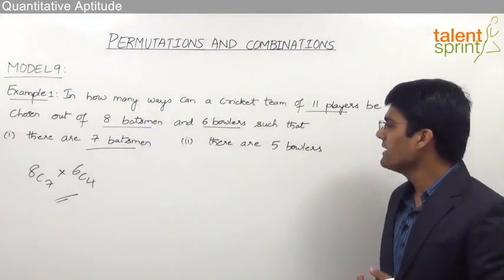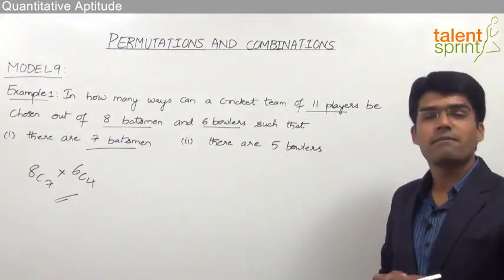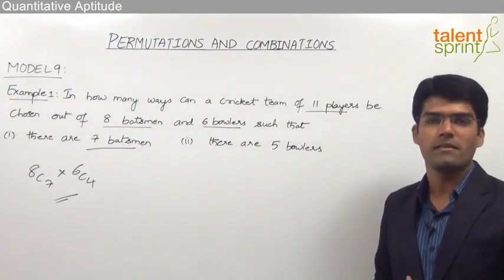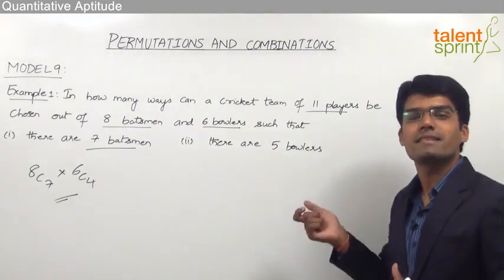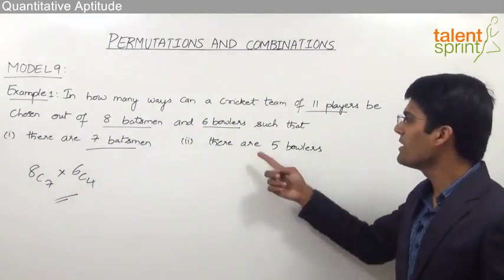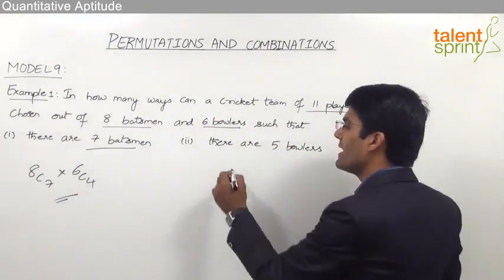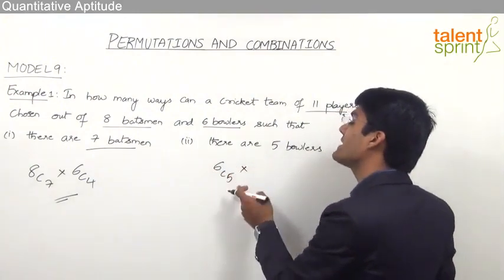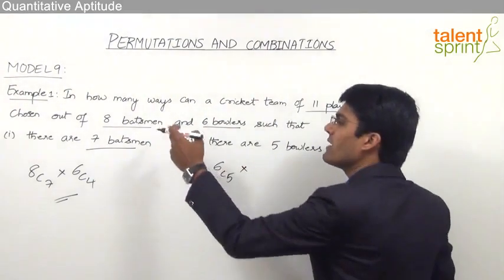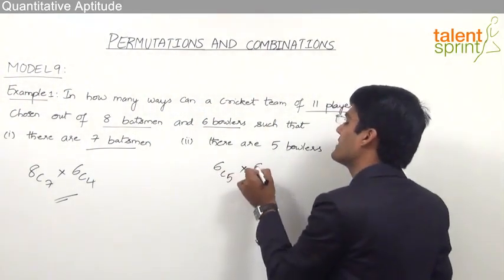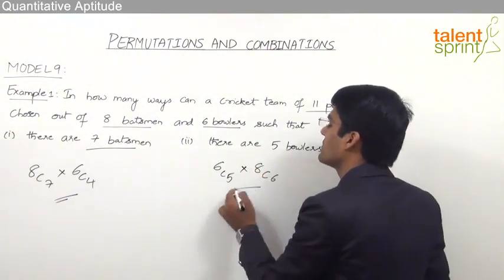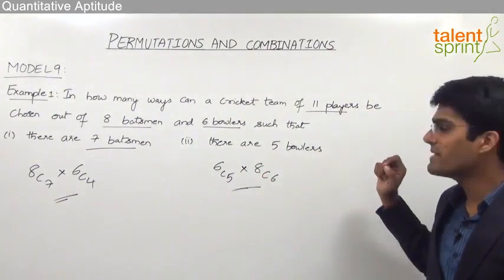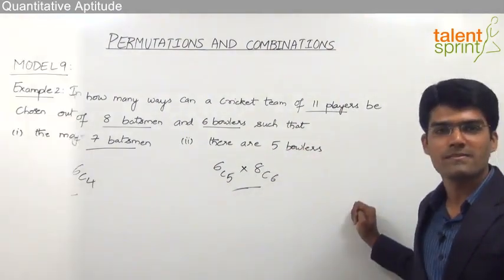For the second bit, there are 5 bowlers in a team of 11 players, so obviously the remaining 6 have to be batsmen. 5 bowlers out of 6 can be done in 6C5 ways, and 6 batsmen out of 8 is 8C6. So these are the number of ways in which a team of 11 players can be selected where there are 5 bowlers.